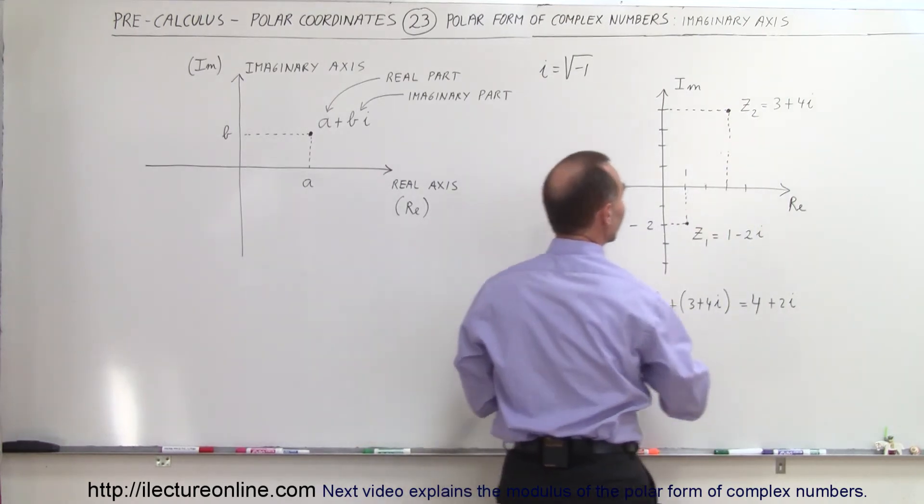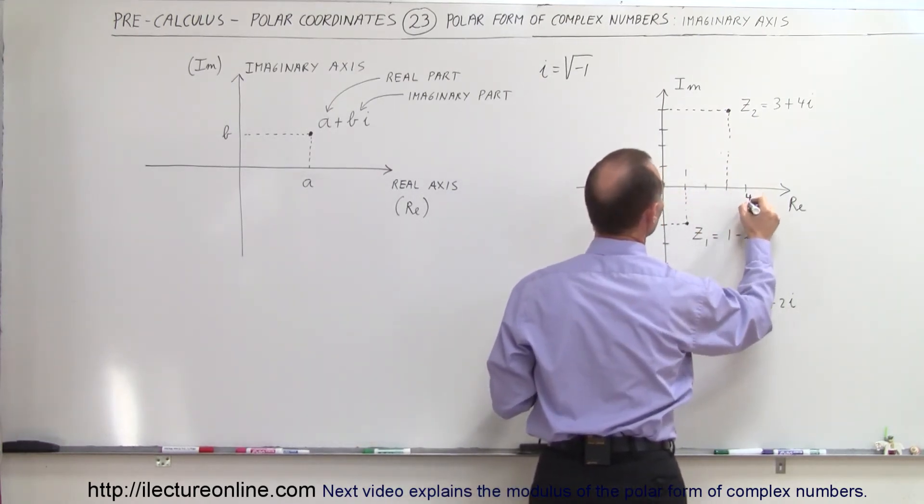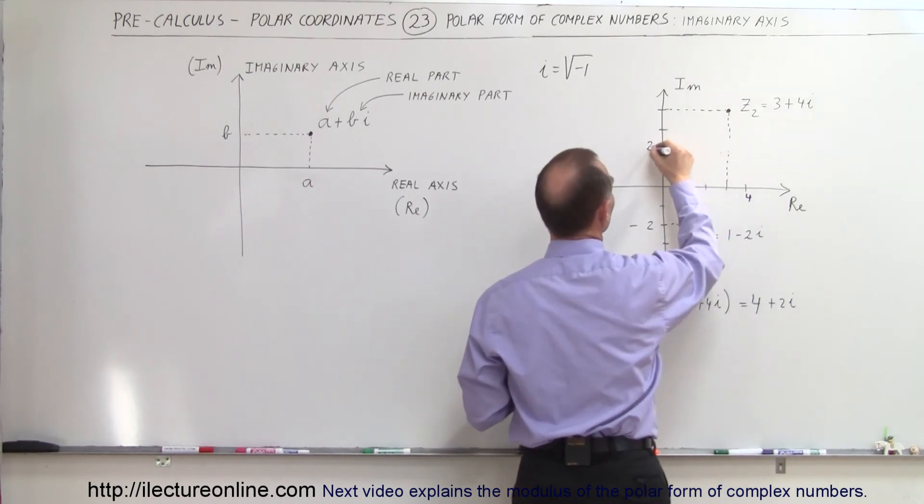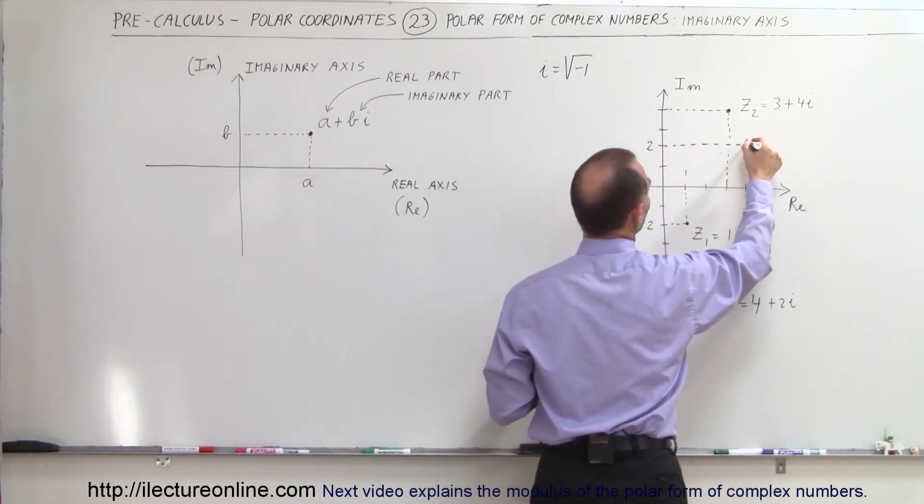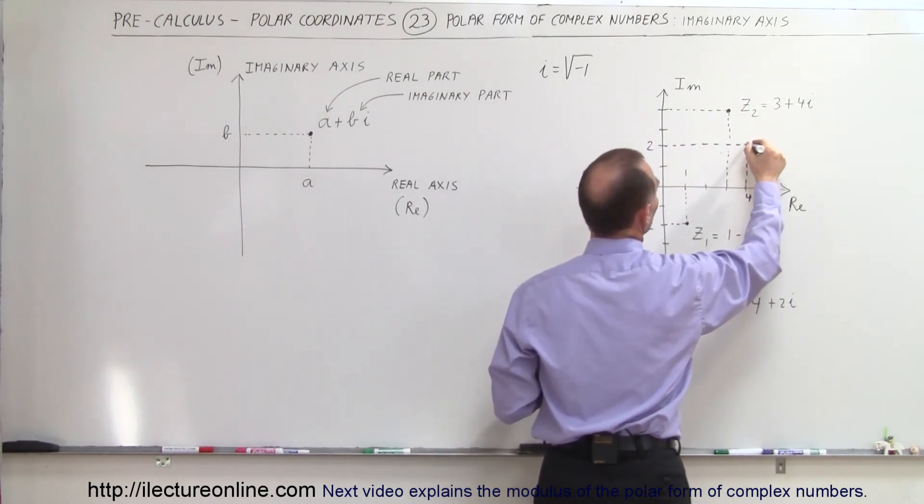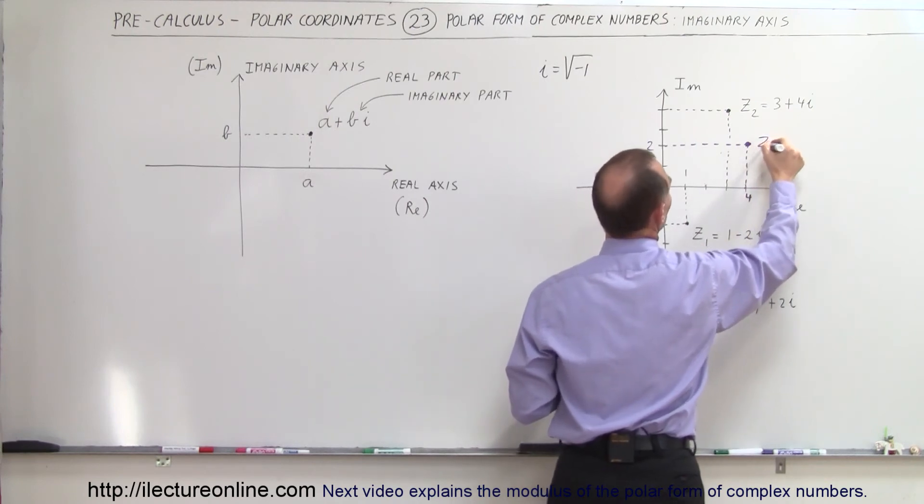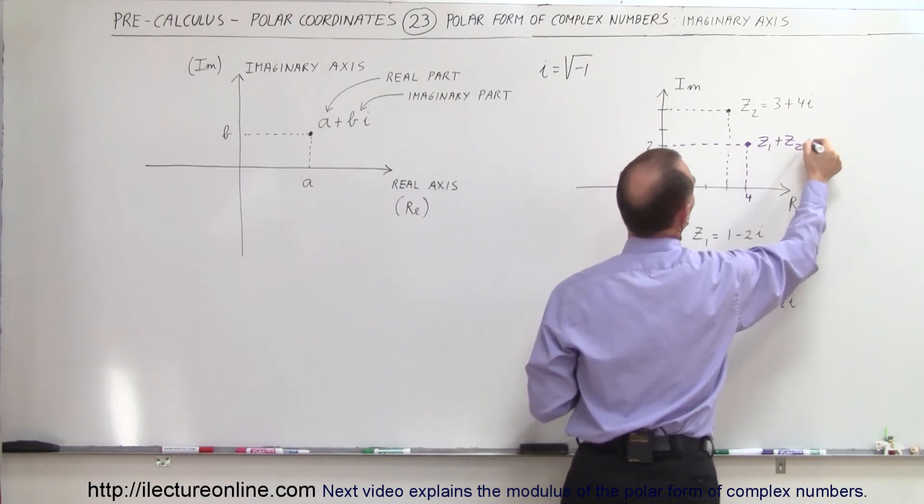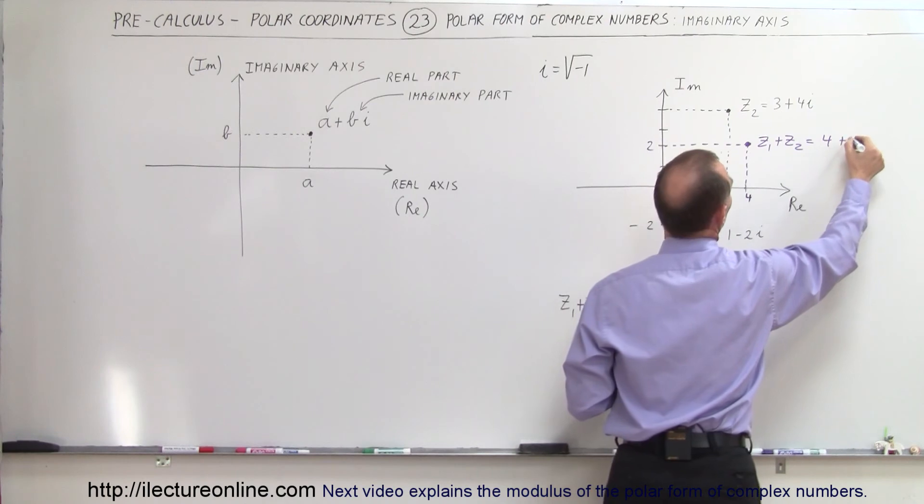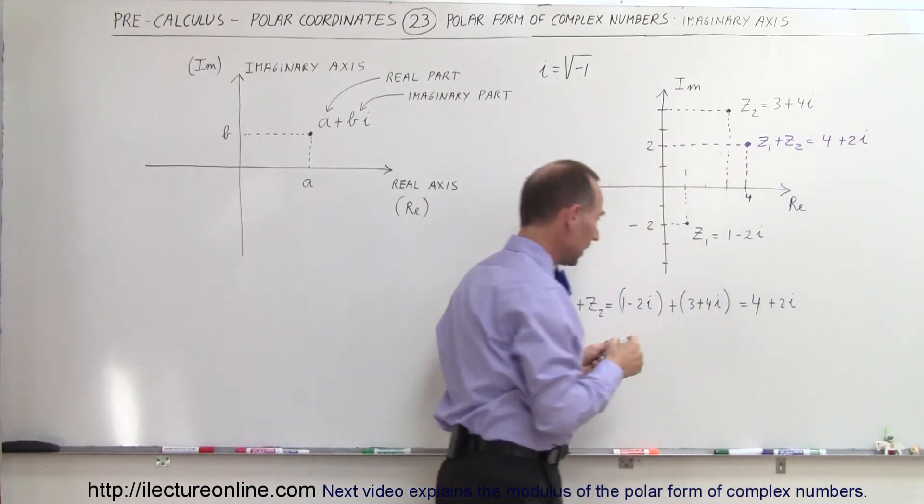So the real part is 4—1, 2, 3, 4 right there. The imaginary part is 2 right there. If we add the two together, that would be this point, and that is Z1 plus Z2, which equals 4 plus 2i.